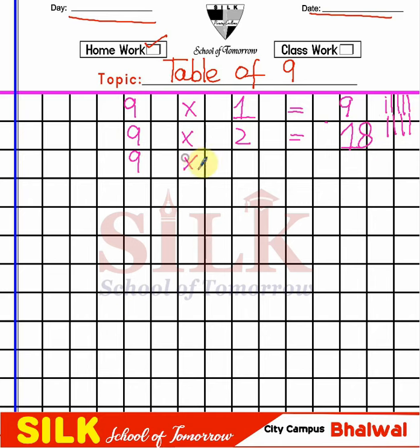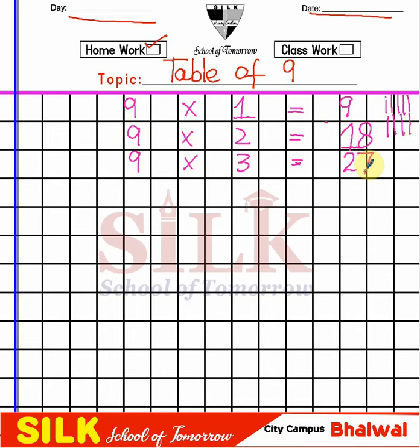You know the table of 9 — you have learnt it in your previous class. 9 threes are 27. Make sure to practice on your register. The more you practice, the more you will learn. We are just revising these tables.